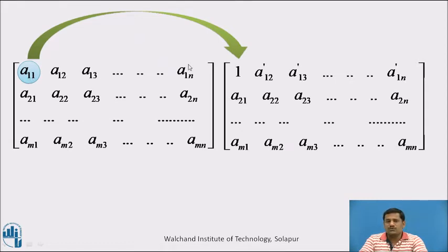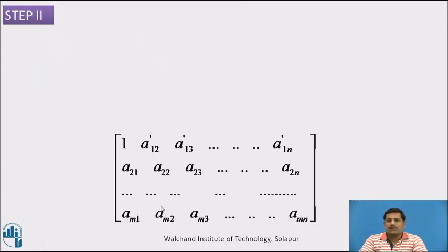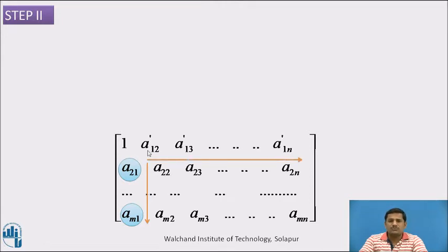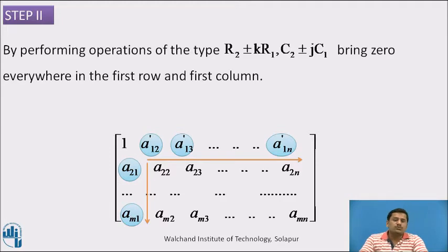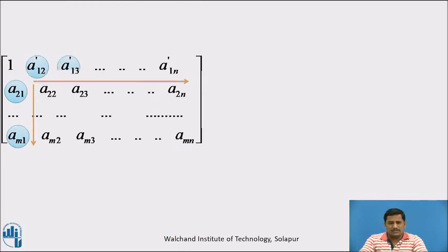If we convert A11 using row transformations, the resultant matrix will look like: 1, A12', A13', and so on — where the dashes indicate elements have been changed once. Step number two: our next job is to convert the elements lying below this 1 to zero using row number 1, and then convert the elements to the right of this 1 to zero using column number 1. To do this we perform row and column transformations of the type R2 ± k·R1 and C2 ± j·C1.